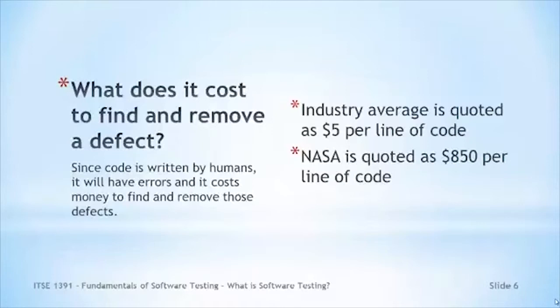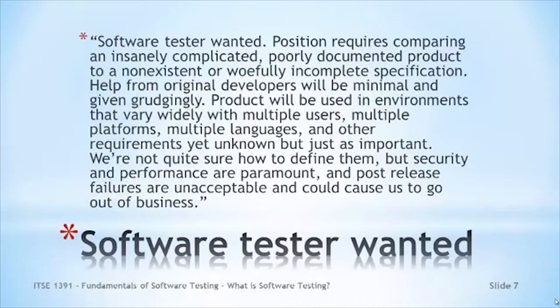Since code is written by humans, it will have errors, and it costs money to find and remove these defects. The industry average is quoted as $5 per line of code to remove the defects. NASA spends $850 per line of code. If you think about it, if you were an astronaut on board the space shuttle, you really wouldn't want to worry about defects in the code controlling the computer that controls your oxygen flow. NASA spends more money.